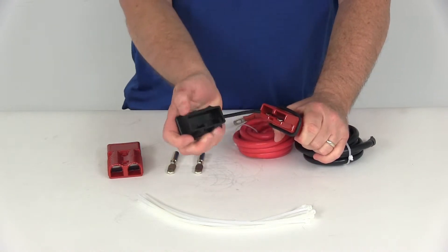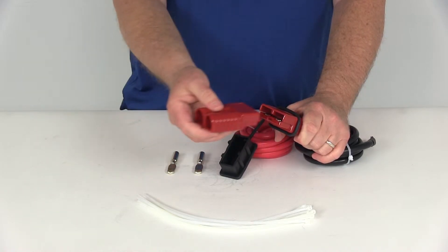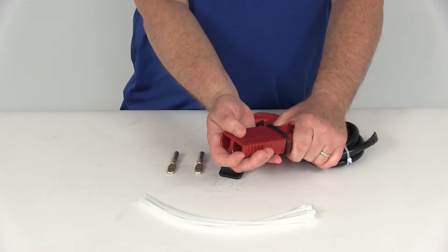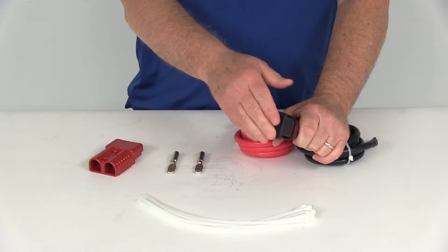It comes with a nice rubber dust cover, so when you go to plug in your connector from your winch, you would just go ahead and plug this in, just like that. When you're not plugged in, you just put the dust cover on to help protect those terminals.